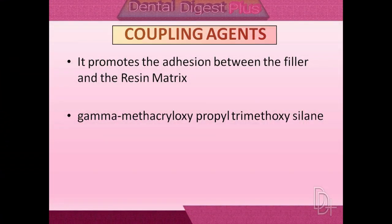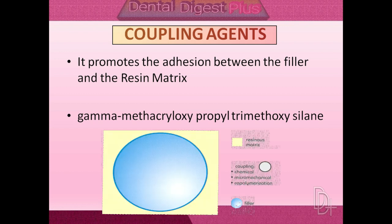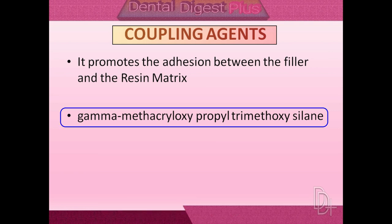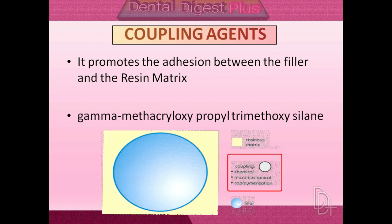It is essential that filler particles be bonded to the resin matrix. The bond between the two phases of the composite is provided by a coupling agent. This allows the more flexible polymer matrix to transfer stresses to the more rigid and stiffer filler particles. Organic silanes like gamma-methacryloxypropyl-trimethoxysilane are commonly used as coupling agents in composite resins. A properly applied coupling agent can impart improved physical and mechanical properties and inhibit leaching by preventing water from penetrating along the filler-resin interface. Since coupling agents work best with silica particles, all modern composite resins are based on silica-containing fillers.